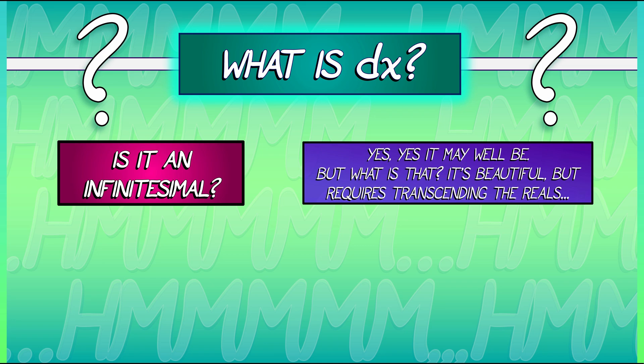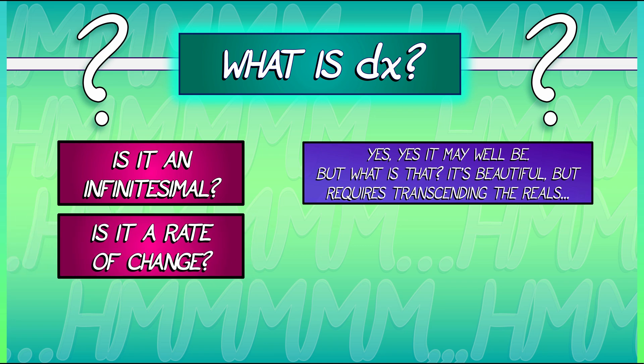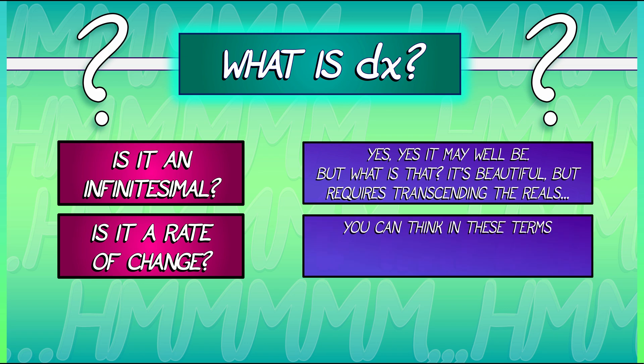So maybe it's a rate of change. DX is just like how fast X is changing. Well, you can think in those terms. That's okay. That can be helpful in many contexts. But that's not really what DX is.